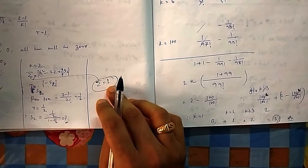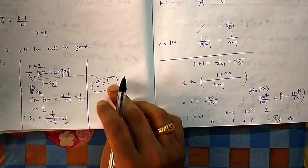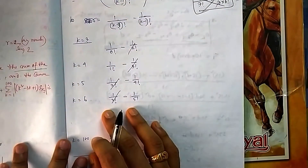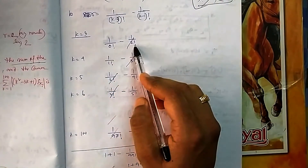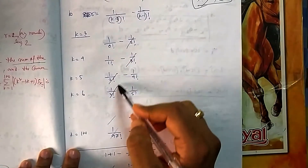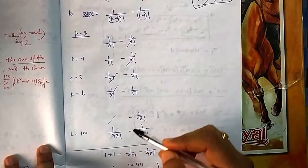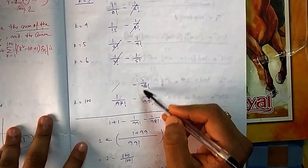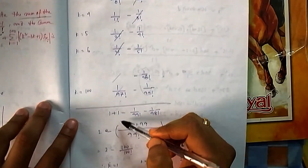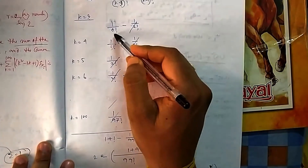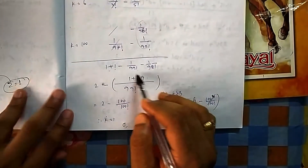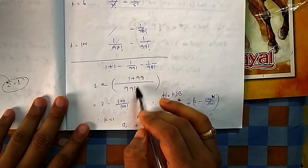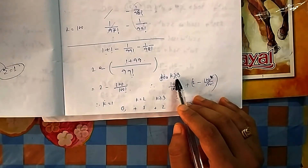For k=1 the output is 0, for k=2 it is 1, and for k≥3 we use the telescoping formula 1/(k-3)! - 1/(k-1)!. Writing out the terms from k=3 onwards, consecutive terms cancel — this this and this cancel — leaving only the last two terms uncancelled. The term 1/98! would have appeared at k=101 but we stop at k=100, so we're left with 1/98! and 1/99!. Taking LCM = 99!, these combine to give 100/100!.